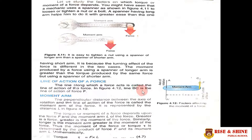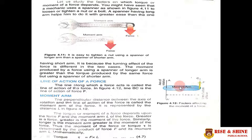The line along which a force acts is called the line of action of the force. In figure 4.2, line BC is the line of action of the force. As you can see in this figure, this is the axis of rotation, this is the line of action of the force, and the perpendicular distance between them — as shown by the cursor — is called the moment arm. The perpendicular distance between the axis of rotation and the line of action of a force is called the moment arm.